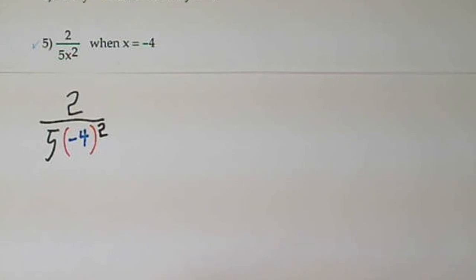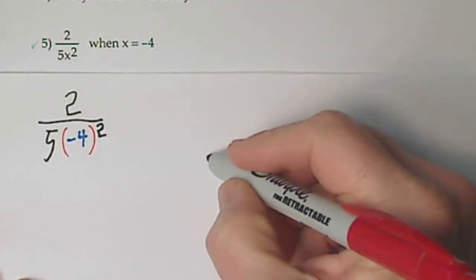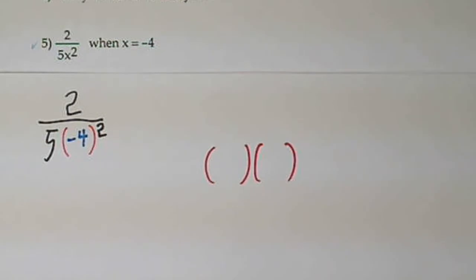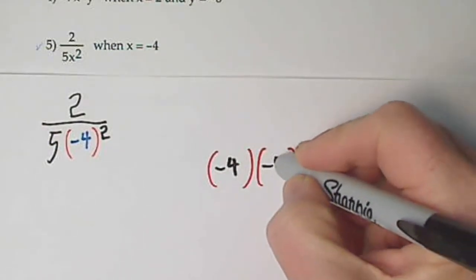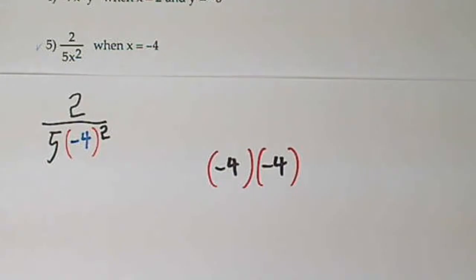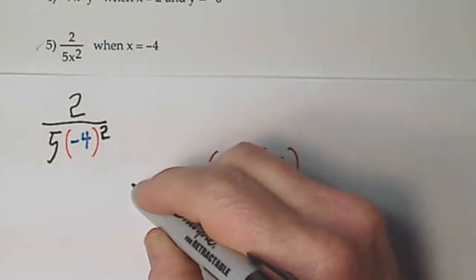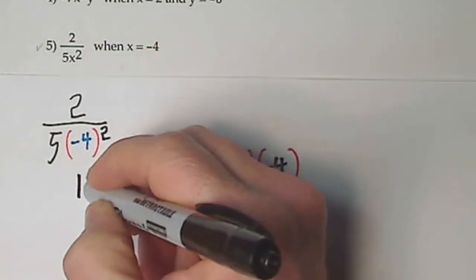The 2 is touching the parentheses, so you have two sets of parentheses, and we know there's a negative 4 sitting in each one. When we multiply them together, we get a positive 16. So that value is going to sit right underneath — there's our 16.